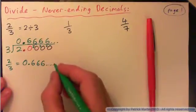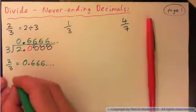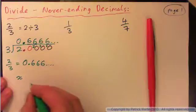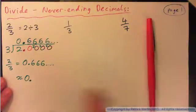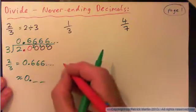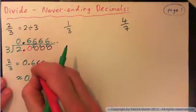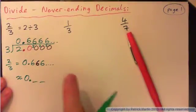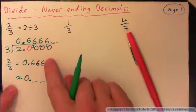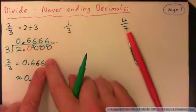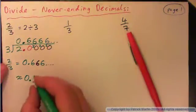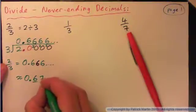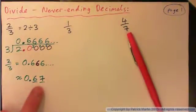If I want to round that to the nearest hundredth — this is tenths, hundredths — I just want two digits. So round it to the hundredths digit. The next digit after that is a 6, so I round up. That gives 0.67, rounded to the nearest hundredth.